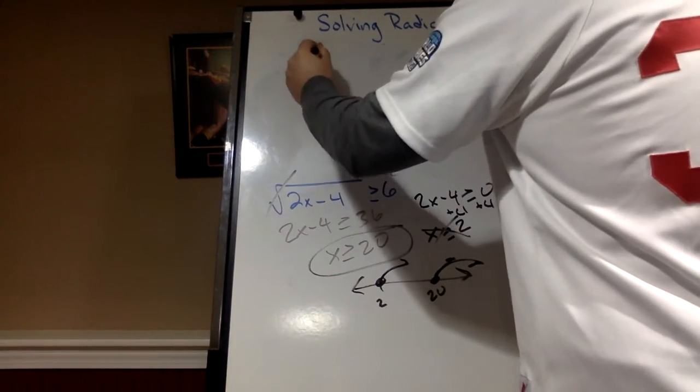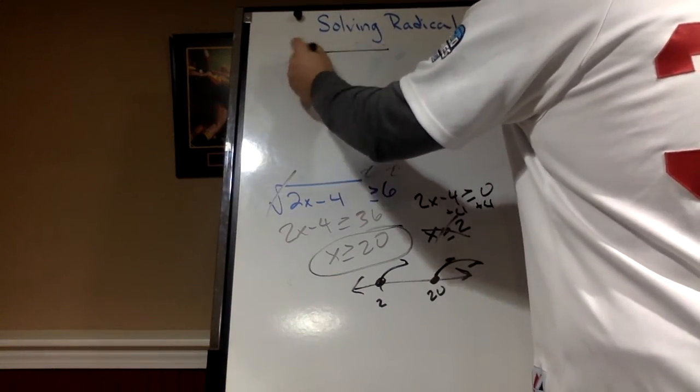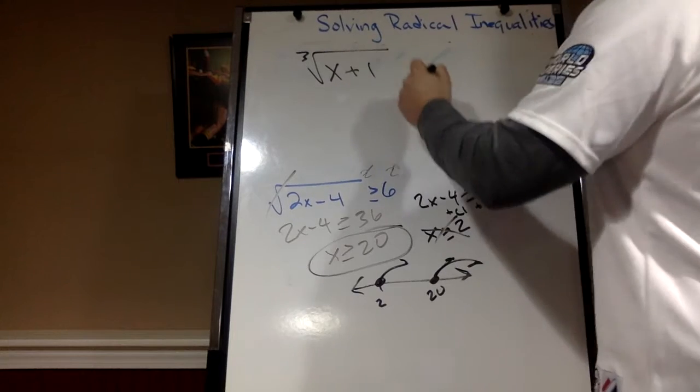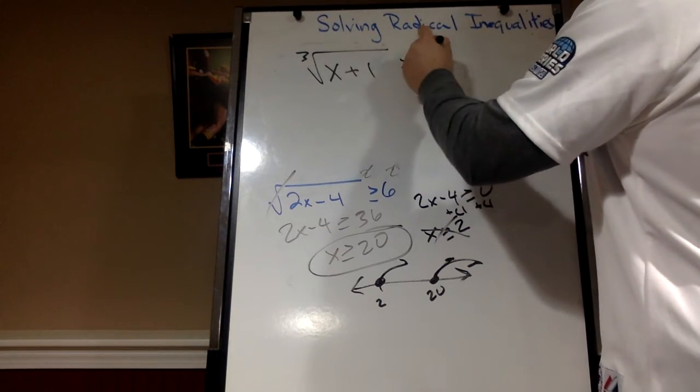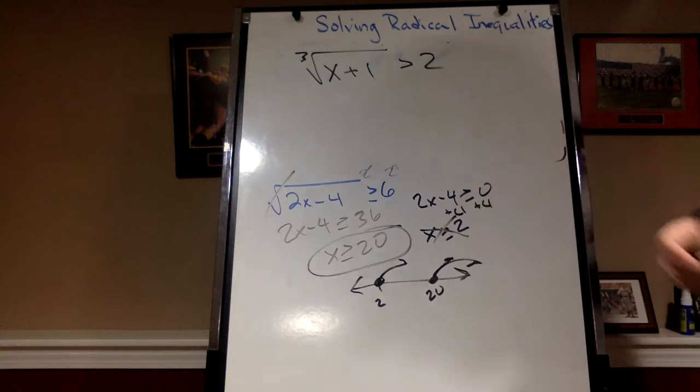What happens if we do cube root? Say cube root of x plus 1 is greater than 2. Well, what's the opposite of cube root?